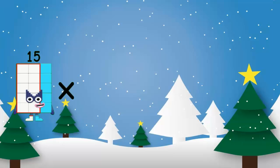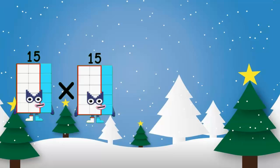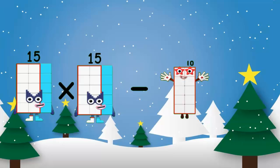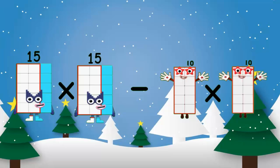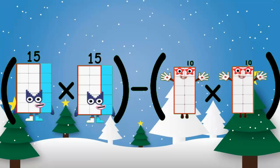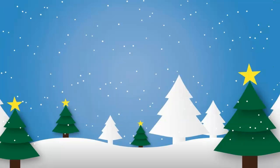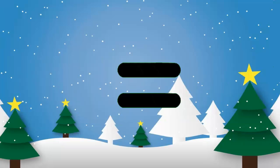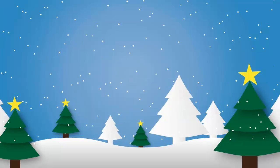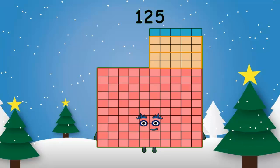15 multiplication 15 minus 10 multiplication 10, open bracket, equal to 125.